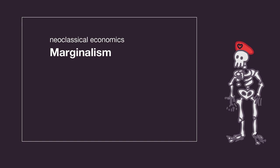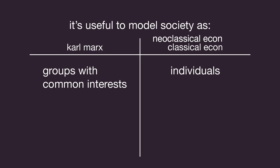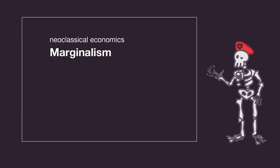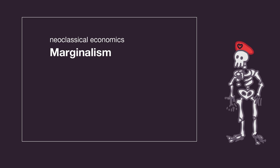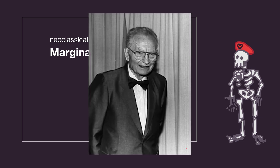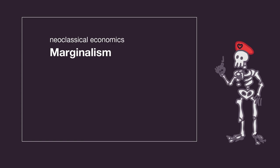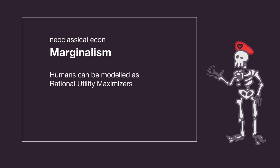Marginalism says that you can effectively model the economy as being made up of individuals without having to get into class analysis and all that other uncomfortable stuff. Everyone has their own personal preferences. Each person likes different things to different amounts. So the reason the labor theory of value can't reliably predict prices, they say, is because it doesn't take into account the personal preferences of every individual in the market. We'll talk about this in a future video on supply and demand. The formal definitions of all of this came out of a guy called Paul Samuelson, and by the end of the video, you're going to wonder what end of him it came out of. Paul Samuelson said that humans can accurately be modeled as rational utility maximizers.